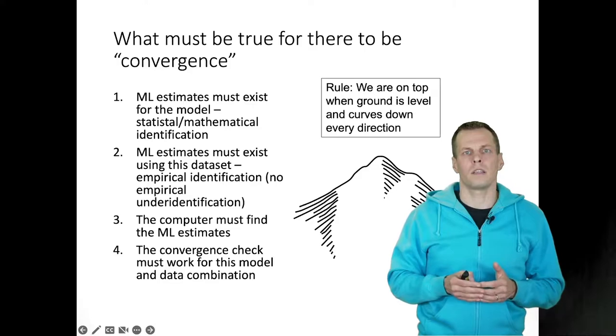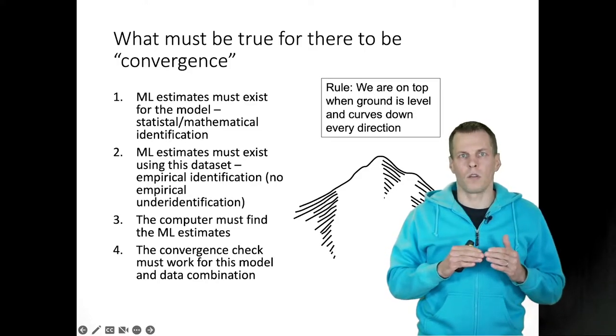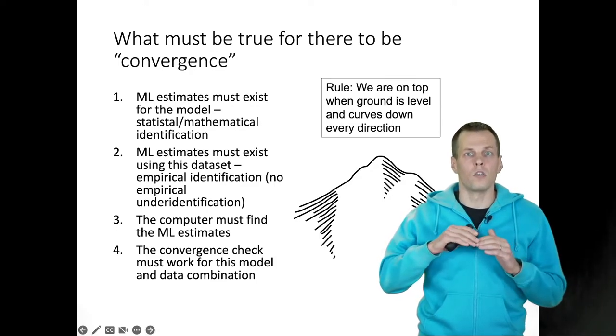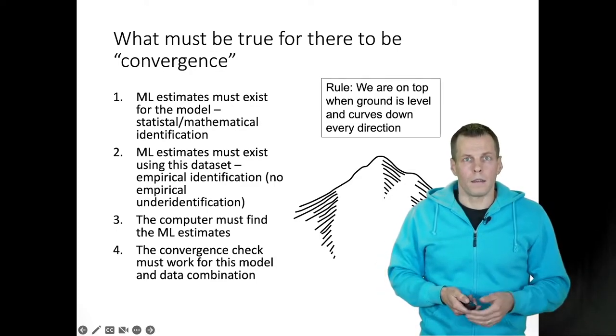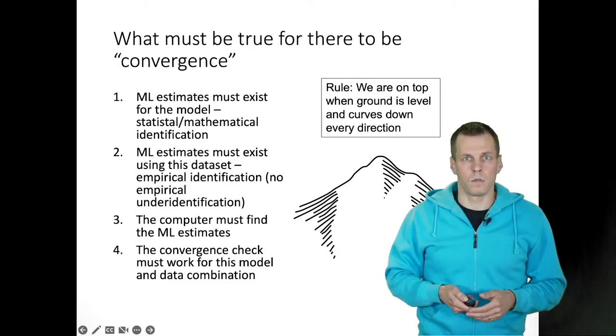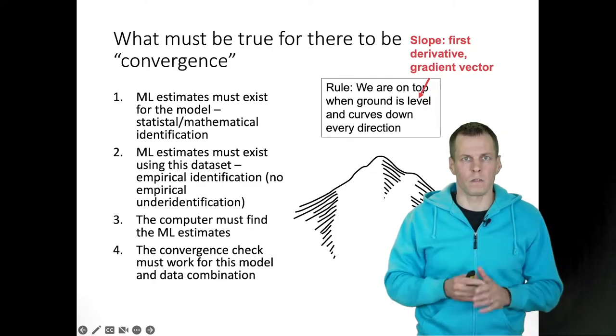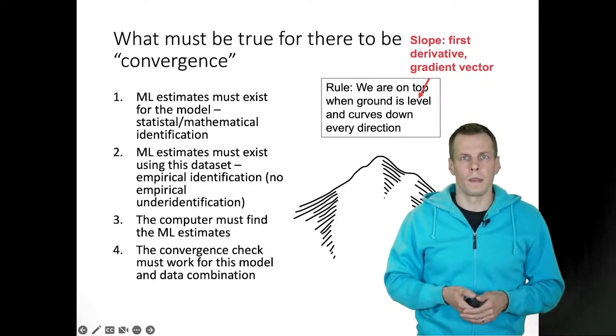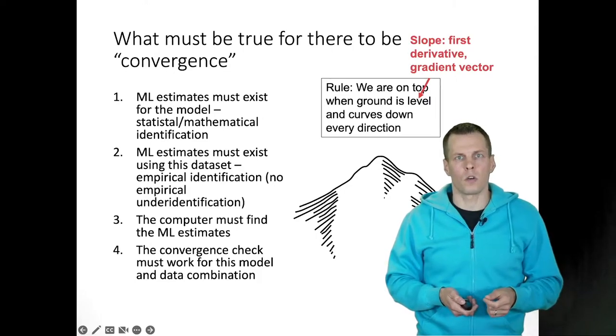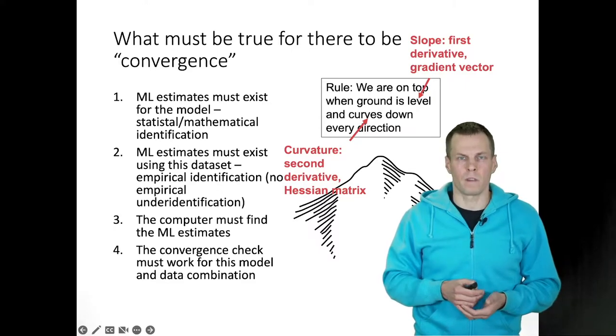The point here is that we cannot take a step to any direction and go up anymore. We would always go down. The slope, the flatness, is stored in the gradient vector which contains the first derivatives of the problem. And the curvature is stored in the Hessian matrix which contains the second partial derivatives of the problem.